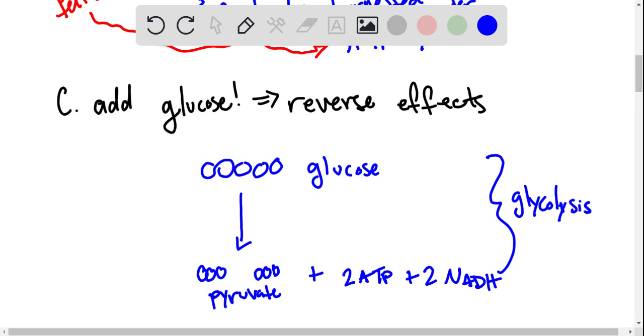So what we're told is if we add the glucose and it gets to go through this whole process, then it reverses the effects. But if we add this 2-deoxyglucose, which inhibits glycolysis from happening, then there will be no reversal. So this is the setup, and the question becomes, why?